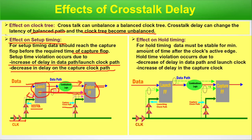Effect on hold timing: data must be stable for a minimum amount of time after the clock's active edge. If delay of the data path and launch clock path decreases and delay of the capture clock increases, hold violation can occur. If data arrives early and the capture clock is delayed with a positive delta, the data path changes too fast before the clock arrives — causing the flip-flop to give ambiguous data. This is how crosstalk delay can impact setup timing and hold timing.